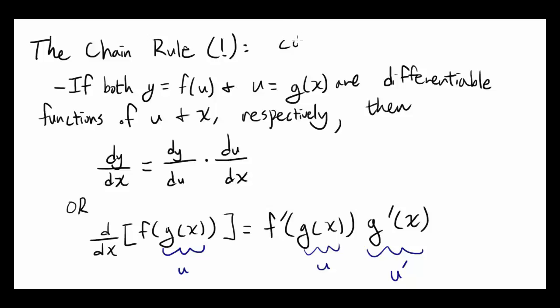You know how to differentiate cosine of x — that's going to be negative sine of x — but you don't know how to differentiate cosine of 2x. It's not negative sine of 2x.